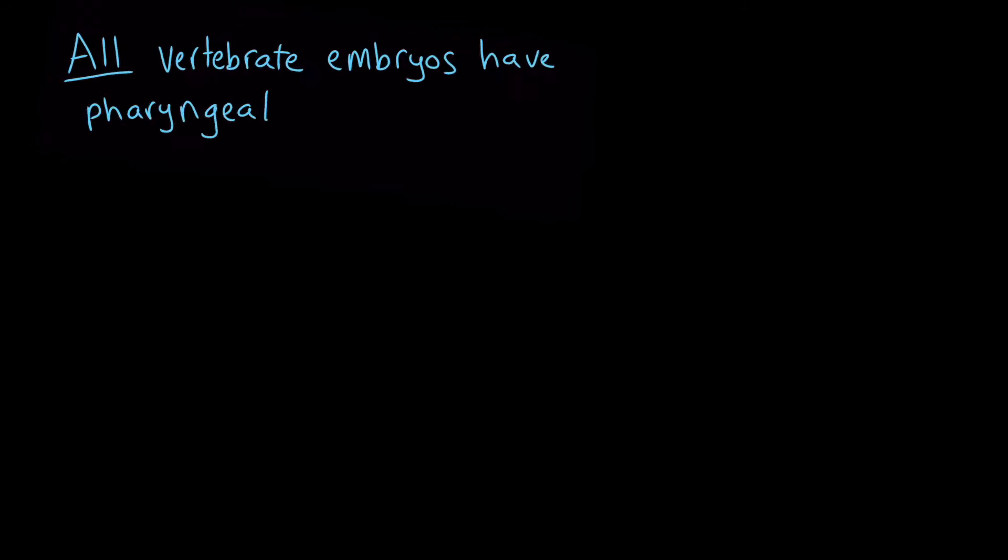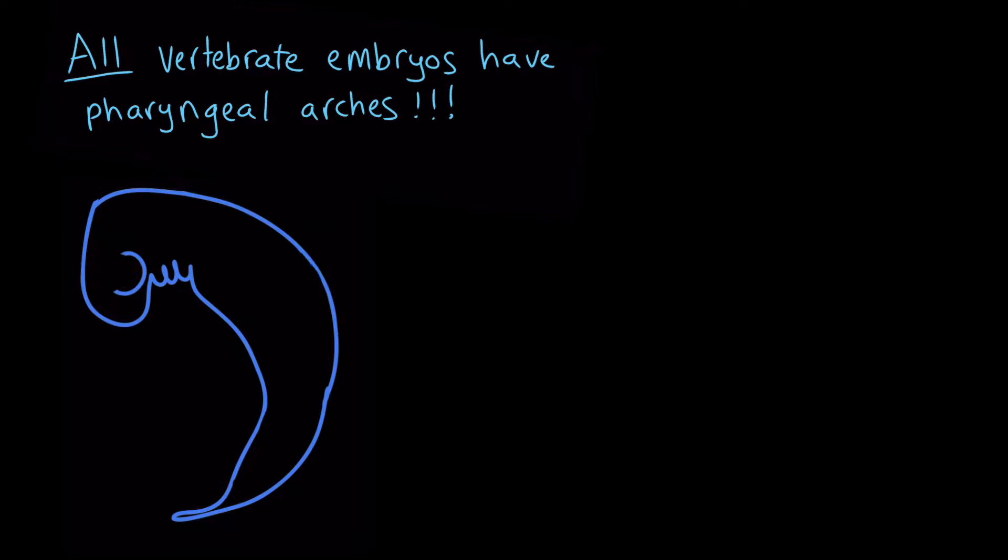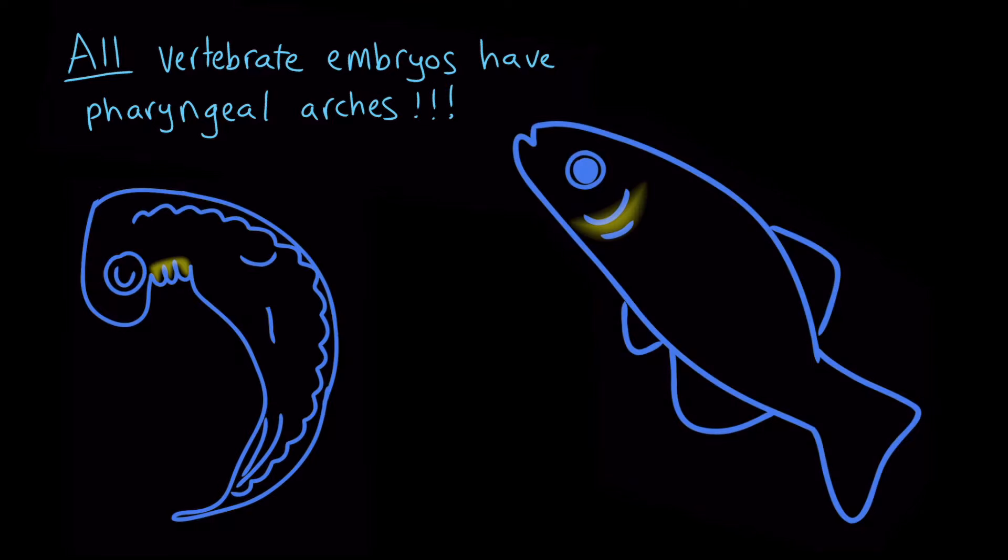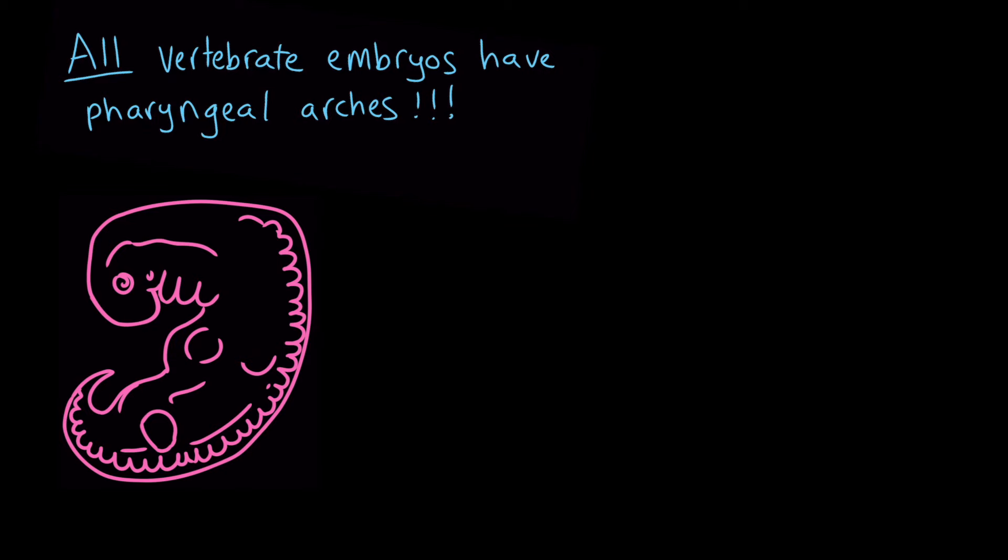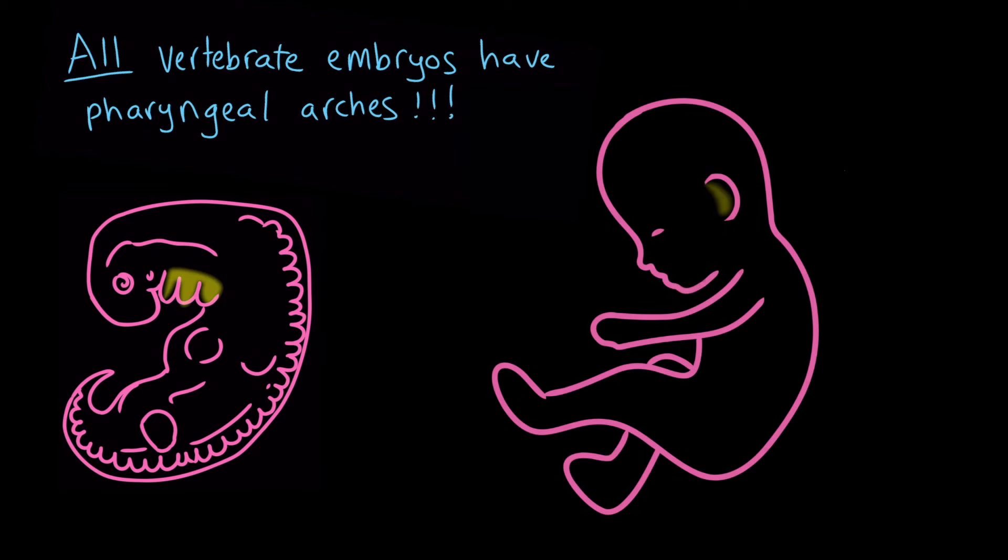And it turns out, all vertebrate embryos have pharyngeal arches early in their development. In fish, these arches develop into gill structures. In humans and other mammals, these arches develop into ear and jaw structures, just like they did in the elephant.